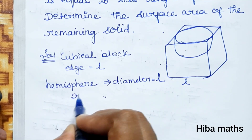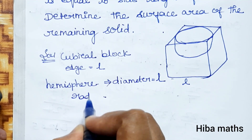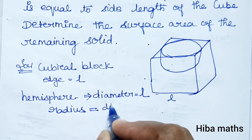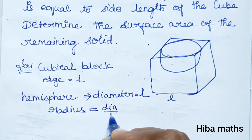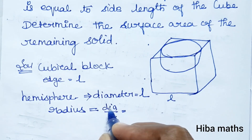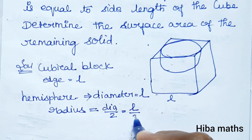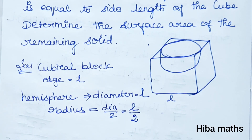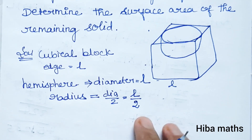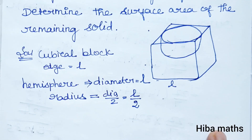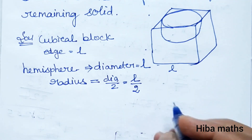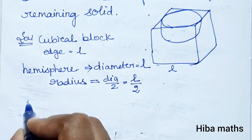Now we find the radius. Since the diameter equals l, the radius r is equal to l divided by 2, that is r = l/2. Now let's find the surface area of the remaining solid.